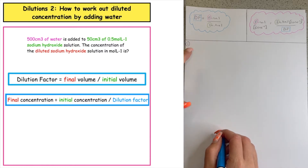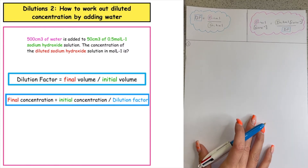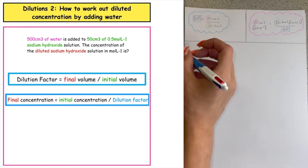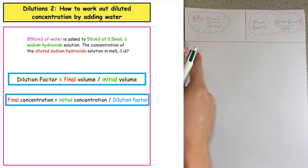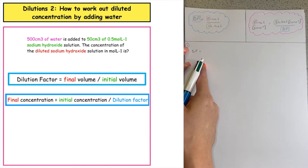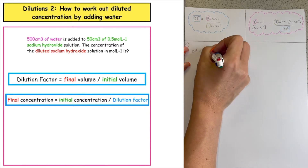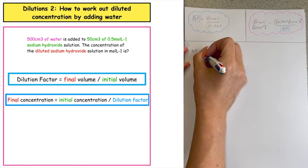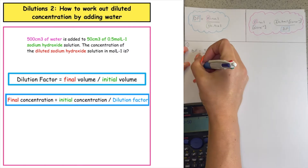The first thing we're always going to work out is the dilution factor. This is not given by a ratio, but by actual volumes of liquids — in this case, water and sodium hydroxide. The dilution factor is equal to the final volume over the initial volume. The initial volume is 50, plus I added 500, giving a final volume of 550 centimetres cubed. So 550 divided by 50 gives a dilution factor of 11.